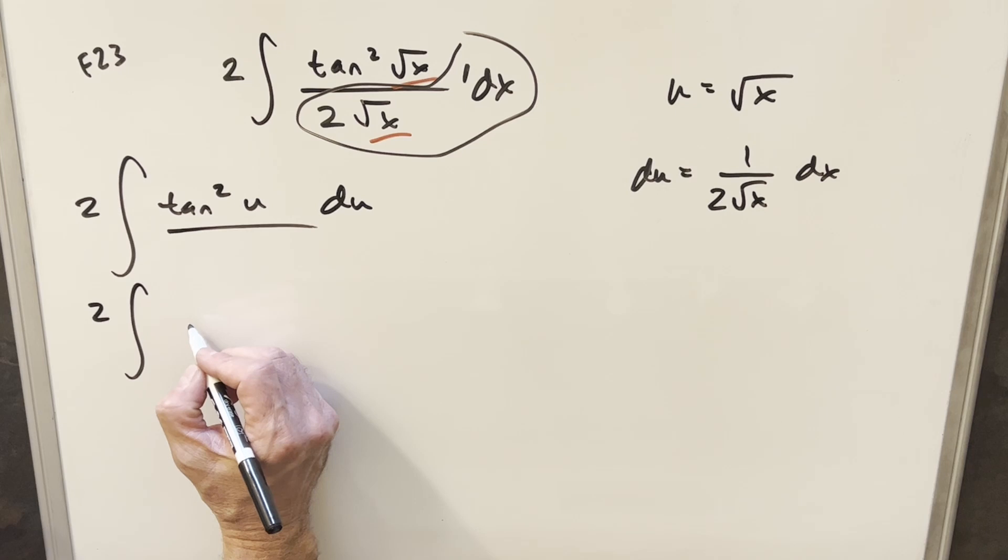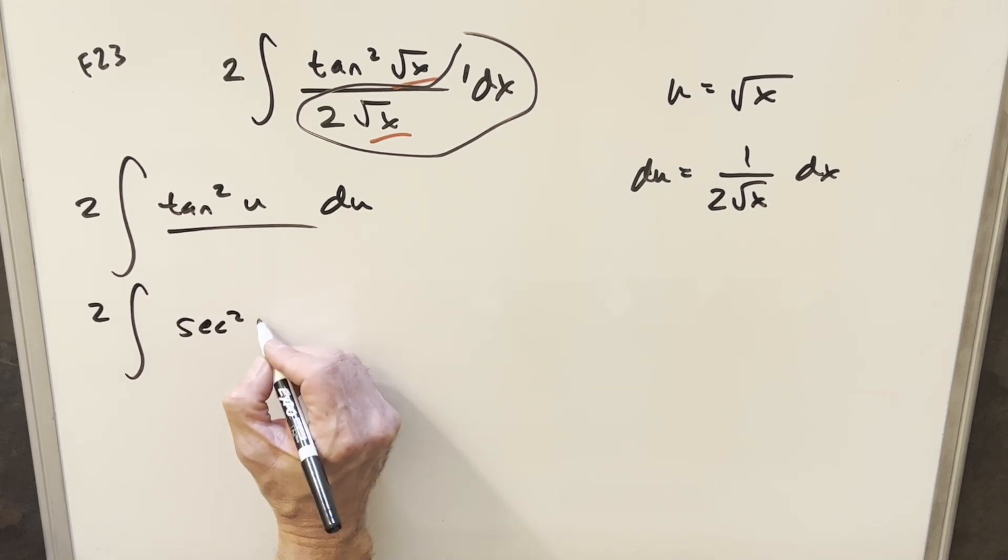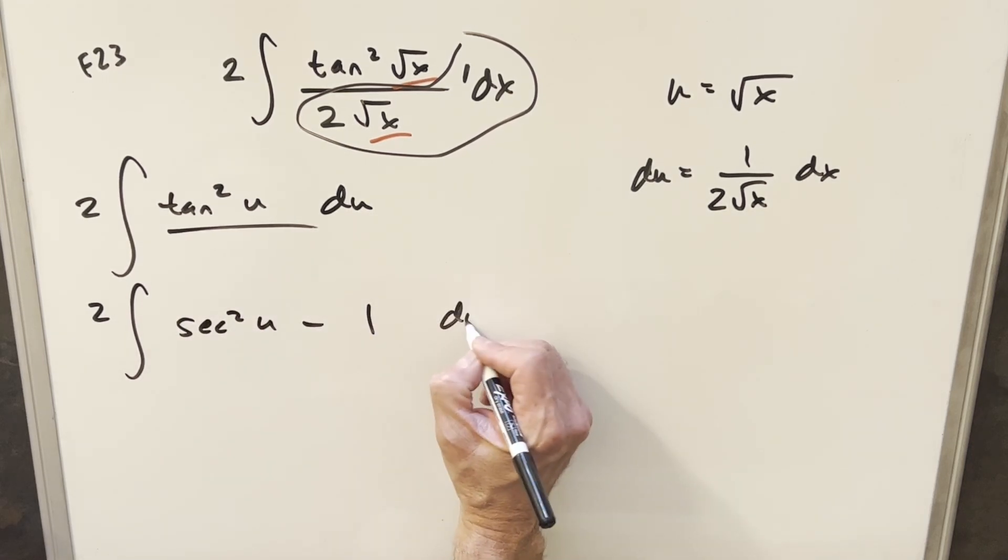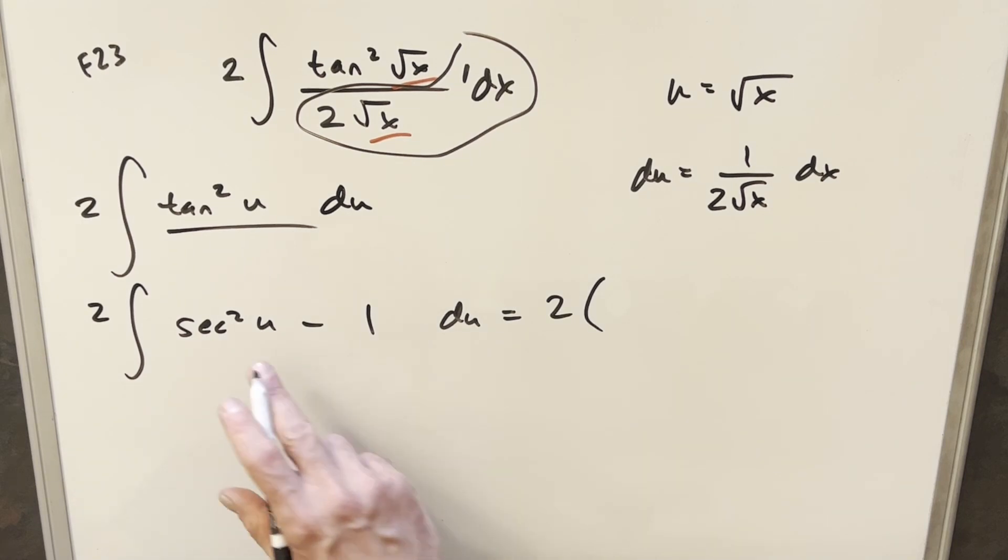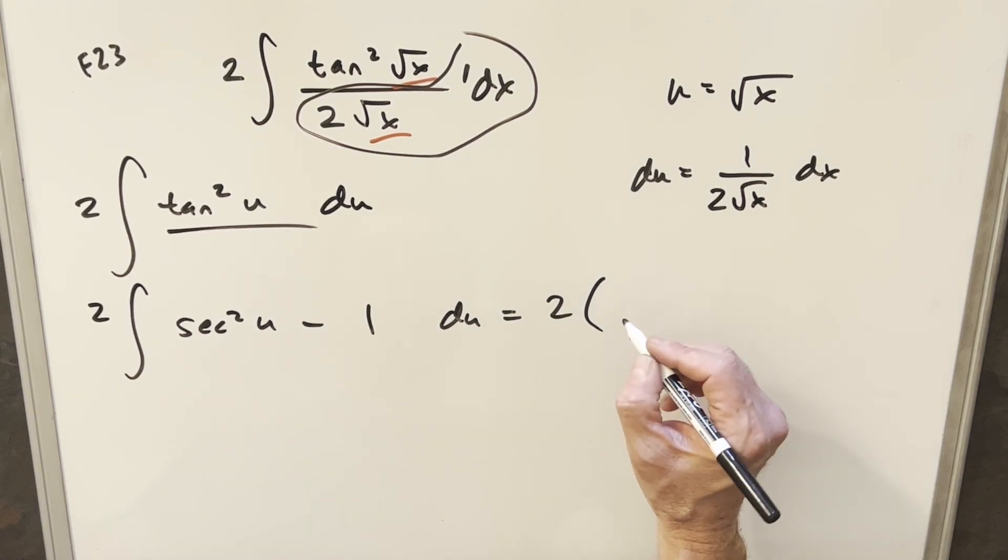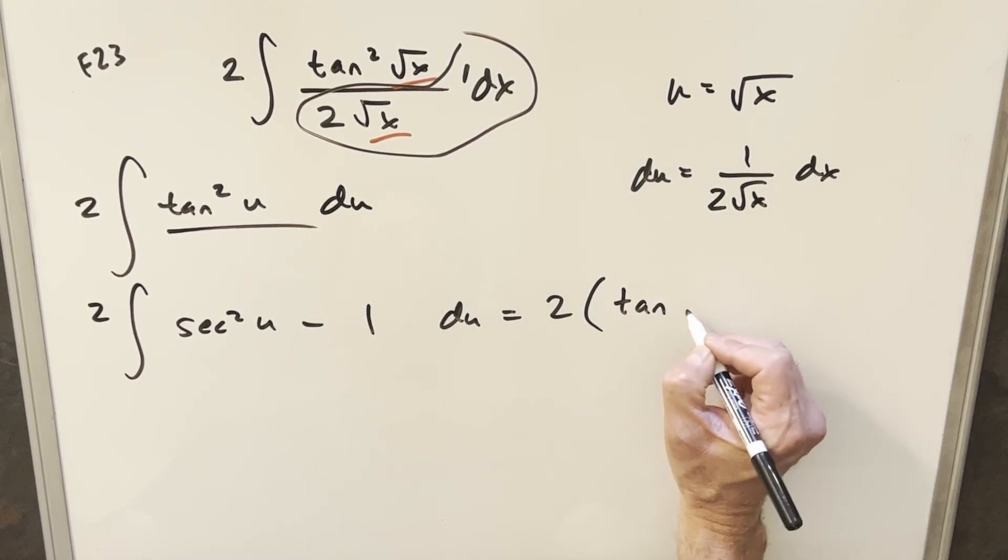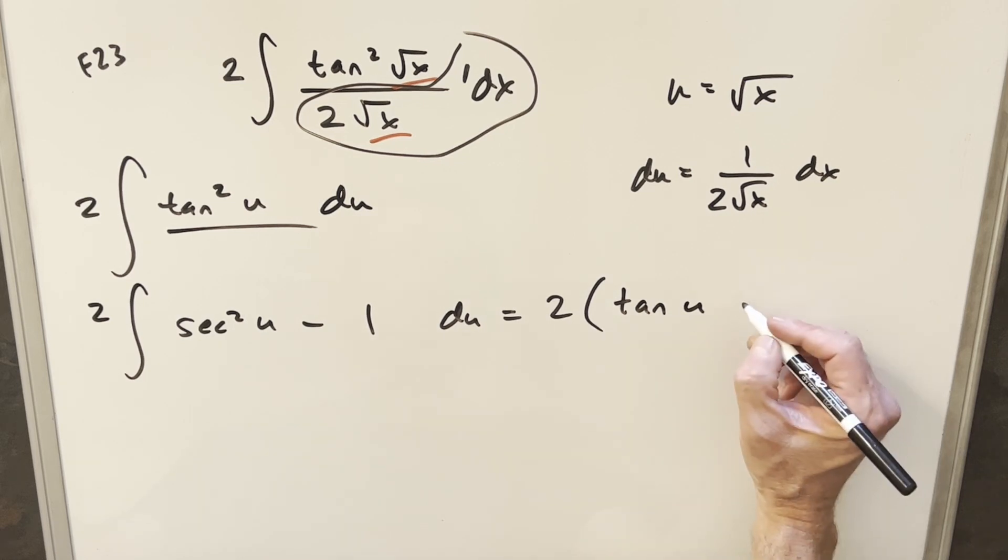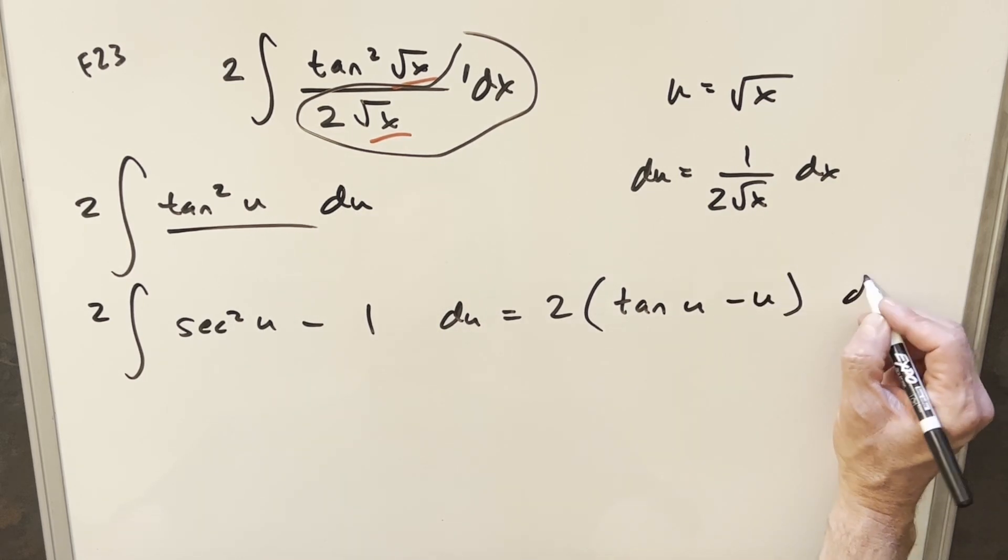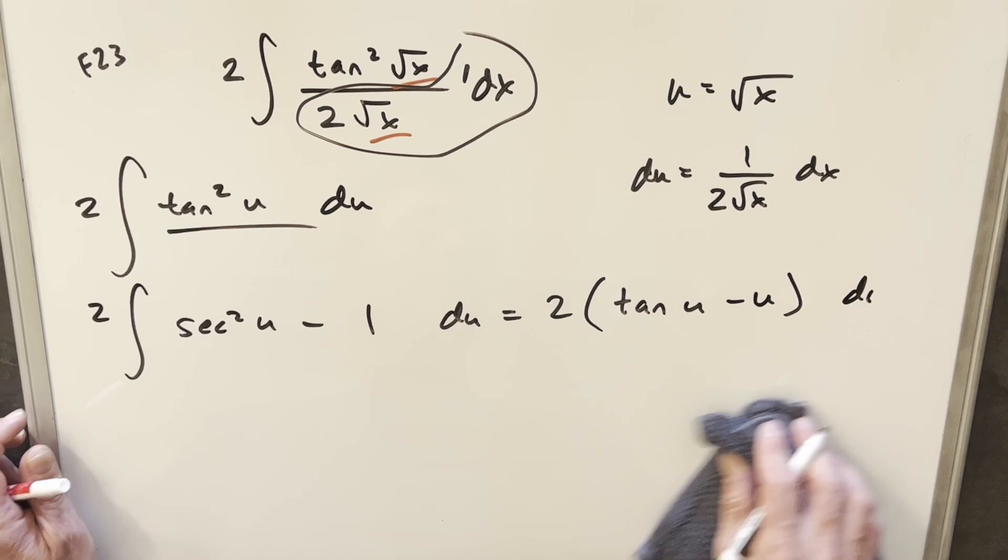I can rewrite tan squared of u as secant squared of u minus 1 du. This is going to be really easy to finish off because the integral of secant squared u is going to be just tan u. And the integral of 1 is just going to be a minus u. No, not du. Get rid of that.